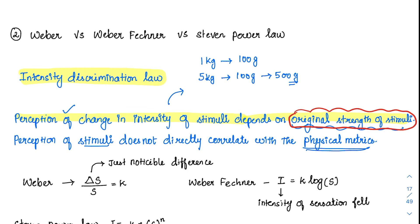So what did Weber say? Weber said that this just noticeable difference, when divided by the original strength of the stimuli, is always constant. He said this law is true for many instances, but not entirely true for different stimuli. For weight it was proven, but for visual and auditory stimuli it was not proven. The law states: just noticeable difference = constant k × S.